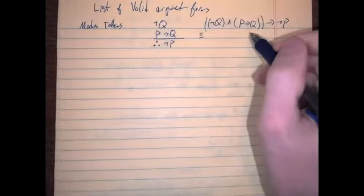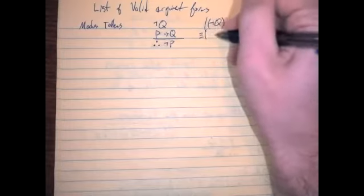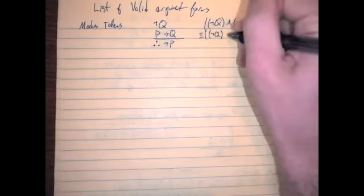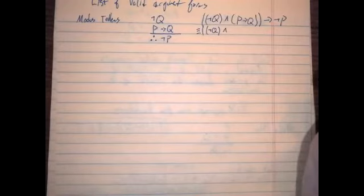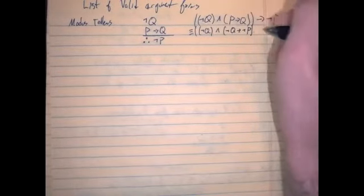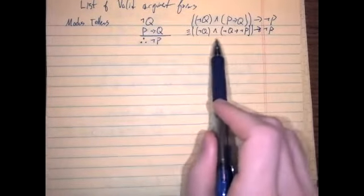This tautology will hold for the same reason that the previous one was a tautology. Is there an equivalent substitution for p implies q? I want to use the contrapositive. The contrapositive of p implies q is not q implies not p. So the form becomes not q and (not q implies not p), implies not p — which is in exactly the same form as modus ponens, and is therefore a tautology.